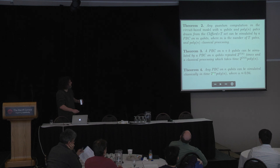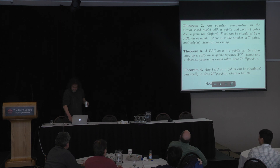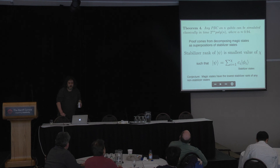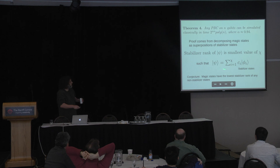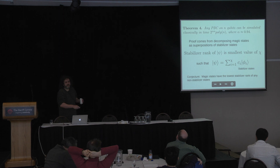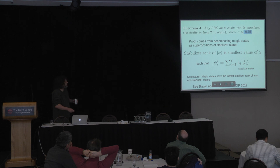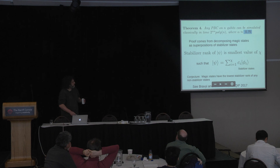You can peel off qubits in the Pauli-based model without the D-sparsity problem, though you need to add qubits when converting from the circuit model. The surprising result is that Pauli-based computation on n qubits can be simulated in 2^(0.94n) time - so the exponent is 0.94, meaning less than 2^n. This comes from decomposing magic states as superpositions of stabilizer states with minimal stabilizer rank. Bravyi and Gosset's upcoming QIP talk gets this down to 2^(0.75n).